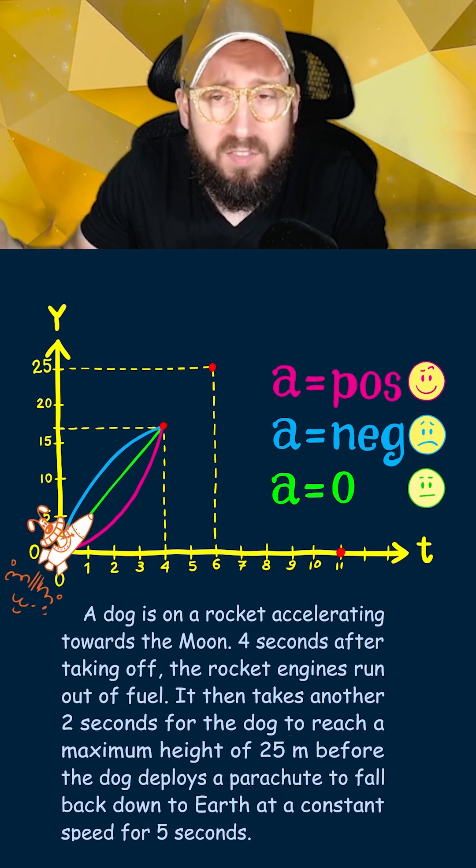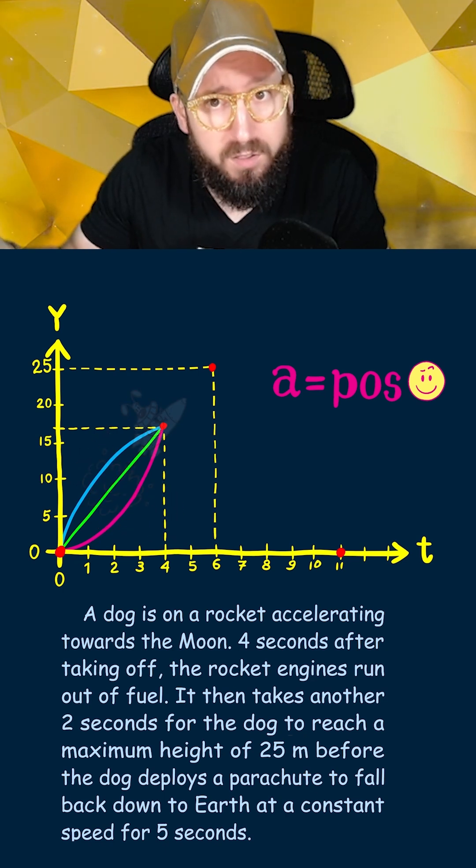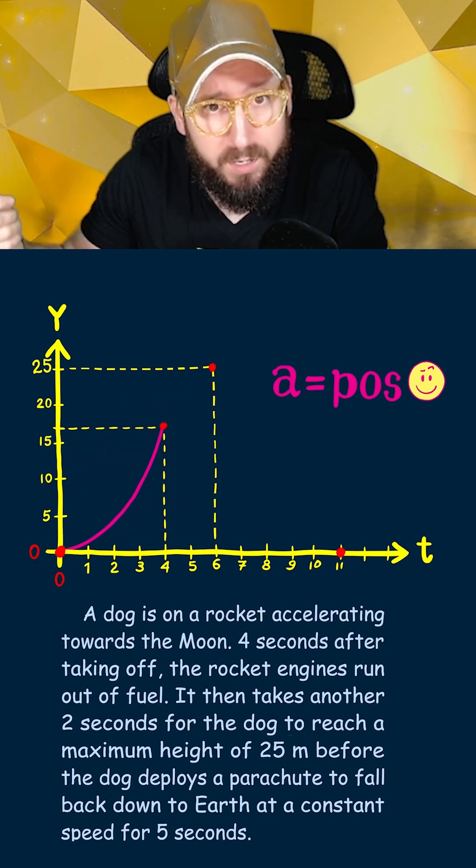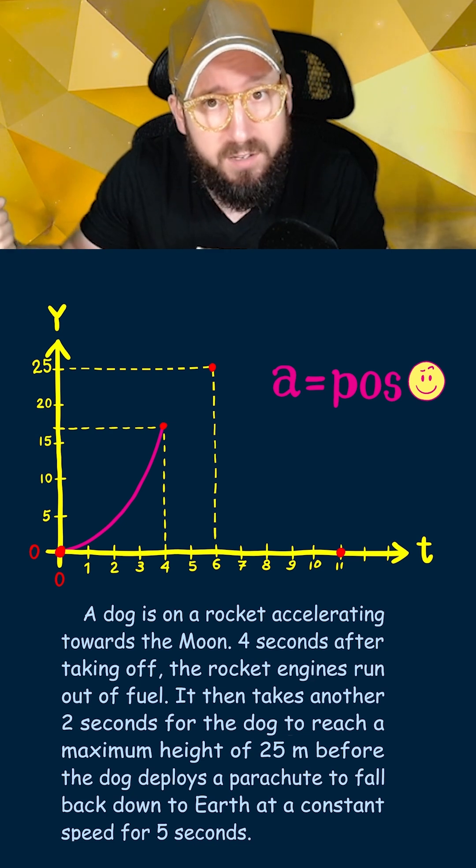Now since the dog is on a rocket that's accelerating up, this means it has positive acceleration. Because of this, we're gonna use the concave up curve to connect our points between t equals zero and t equals four seconds.